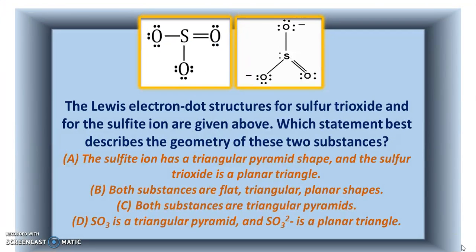Welcome back. Today we are going to discuss an epichemistry question. The link to this question has been given in the description of the video. All the resource links are included in the video description as well. The question is: the Lewis electron dot structures for sulphur trioxide and for the sulphide ion are given above. Which statement best describes the geometry of these two substances?